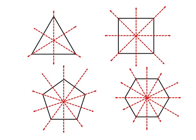Let's compare those four shapes: equilateral triangle, square, regular pentagon, regular hexagon. Notice that for the two with odd-numbered sides — the pentagon and the triangle — the lines of symmetry go from a vertex to the opposite midpoint. And in a square and a hexagon, the lines of symmetry go from opposite vertices and from opposite midpoints.